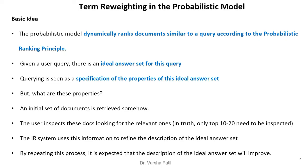The basic idea of term reweighting in the probabilistic model: the probabilistic model dynamically ranks documents similar to the query according to the probabilistic ranking principle. Given a user query, there is an ideal answer set, but we don't know this ideal answer set and must find it through iteration. Querying is seen as specification of the properties of this ideal answer set. An initial set of documents is retrieved, the user inspects them for relevant ones, and the IR system uses this information to refine the description of the ideal answer set. By repeating this process, the description of the ideal answer set is expected to improve.